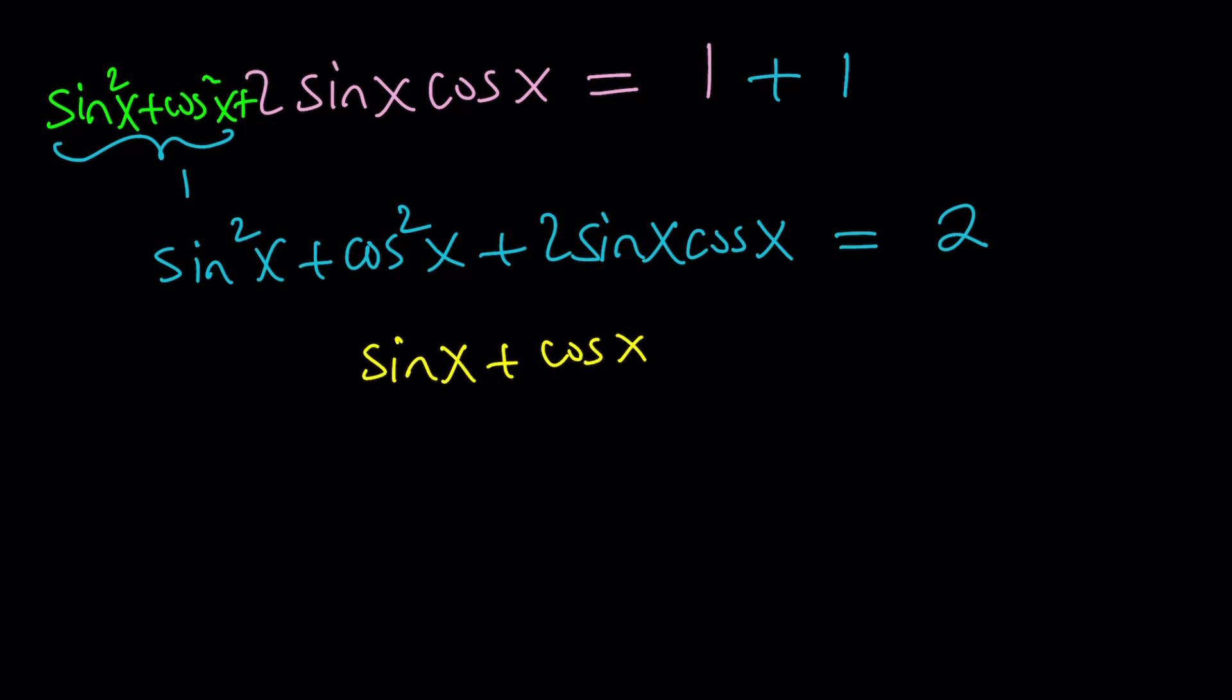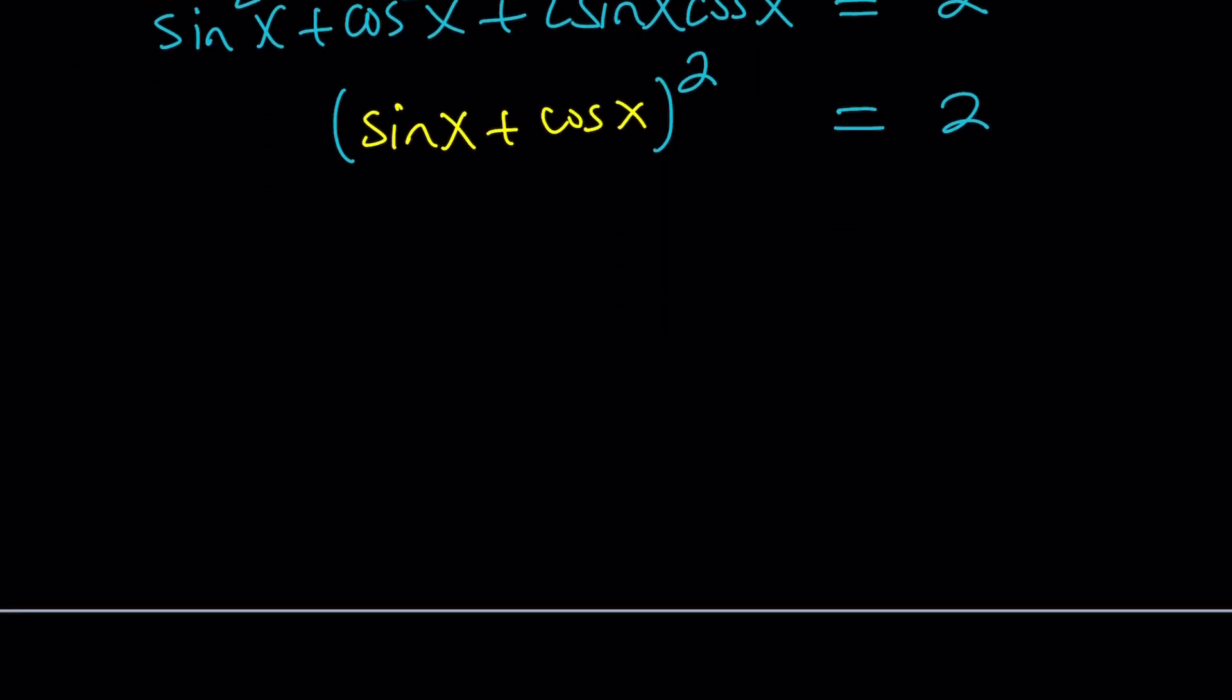So we get sine squared x plus cosine squared x plus 2 sine x cosine x equals 2. Right-hand side is simple. Left-hand side can also be turned into a perfect square. That's why we're adding it. This is sine x plus cosine x to the second power, and we have a 2 on the right-hand side. Something squared equals 2. So if you square root both sides, you get sine x plus cosine x equals root 2, and there's another solution: sine x plus cosine x equals negative root 2.